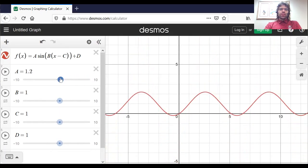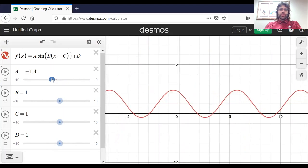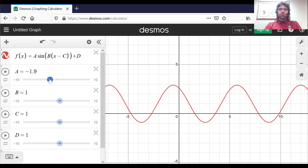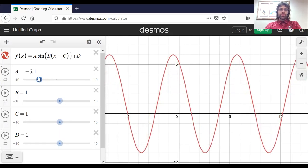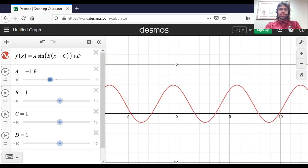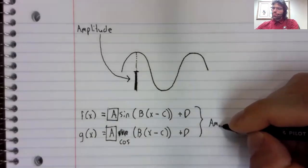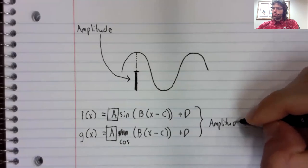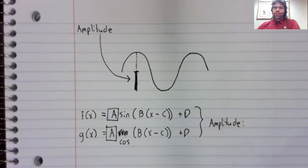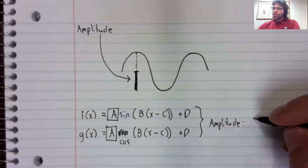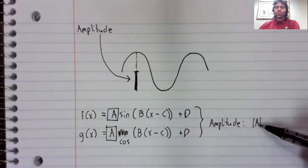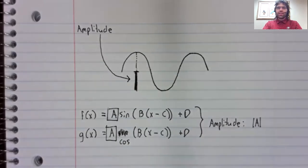A can be a negative constant as well, and it's still controlling the amplitude. In general, the amplitude of a sinusoidal function is the absolute value of A.